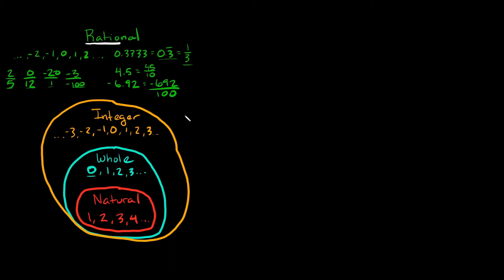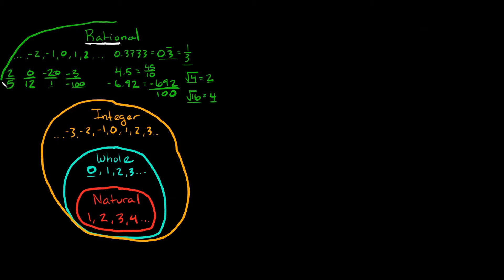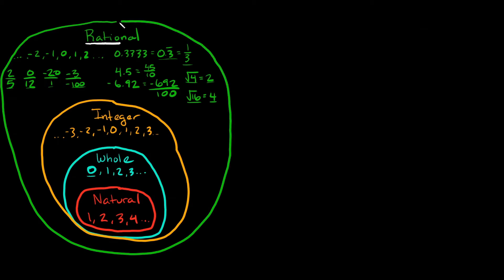The last type also considered rational are perfect square roots. For example, the square root of 4 equals 2, and since 2 is a rational number, the square root of 4 is also rational. Or the square root of 16 equals 4, and since 4 is rational, the square root of 16 is also rational. Rational numbers are essentially the largest classification among the subsets, because rational numbers include everything — integers, whole numbers, and natural numbers.